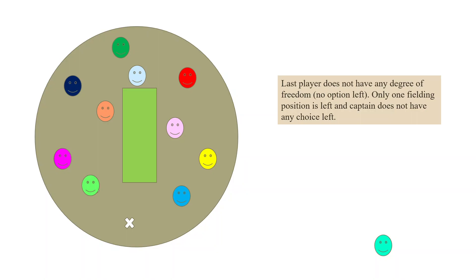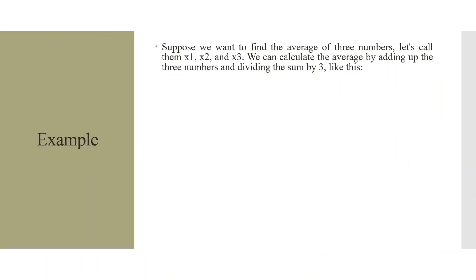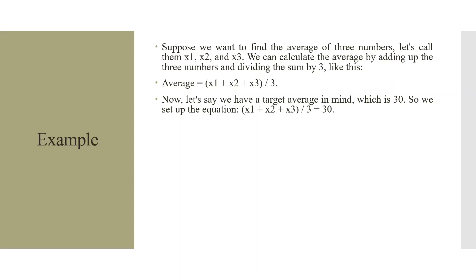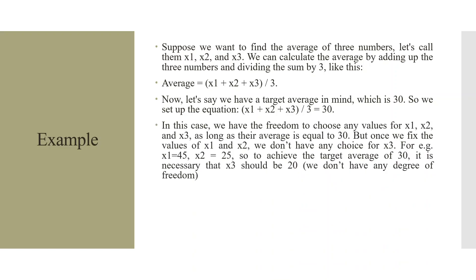The same concept can be understood with a simple mathematics example. Suppose we want to find the average of three numbers x1, x2, and x3. The average equals (x1 + x2 + x3) / 3. If we set a target average of 30, we have freedom to choose any values for x1, x2, and x3 as long as their average equals 30. But once we fix the values of x1 and x2, we do not have any choice for x3.